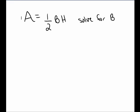To solve for B means I want to get B equals and everything else on the other side of the equation. Here I have a one half multiplied to B and I have an H multiplied to B. I need to clear both the one half and the H to the other side of the equation.